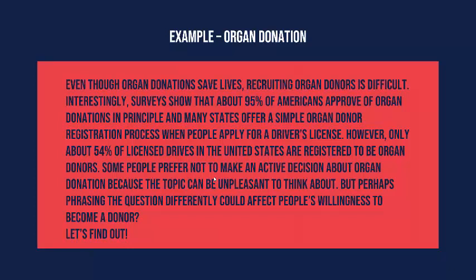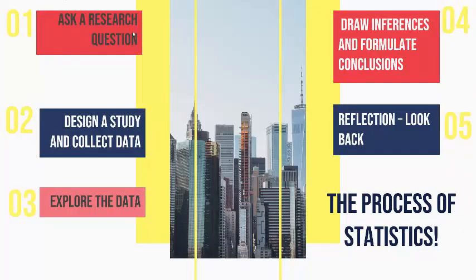Why is this? To be an organ donor, you have to think about your own death and mortality, which is unpleasant. Some people prefer not to make an active decision about it. So perhaps how organ donation is phrased to people could affect their willingness to become a donor. This is my hypothesis: how it's presented to people will affect their decision to be an organ donor. My research question is: will how it's presented influence people's willingness to be an organ donor?